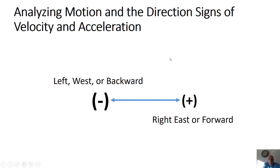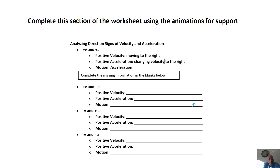Before we look at direction signs for velocity and acceleration, just remember: to the left is negative and to the right is positive. That will be important for the upcoming explanation. In future problems we might change that convention, but for now let's keep everything the same.